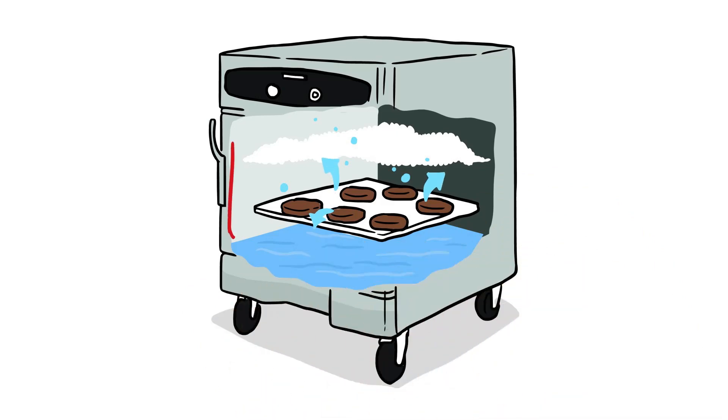Think sous vide. What about texture? Instead of preventing evaporation, CVAP's convected heat controls it. It keeps moist foods moist or crisp foods crisp.